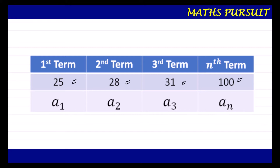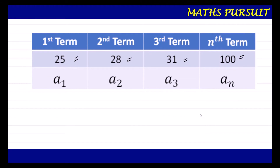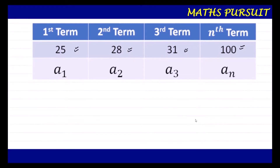We are going to find the sum of the given arithmetic progression. To do that, we will use the sum of arithmetic progression formula: Sn = (n/2) × (a1 + an).